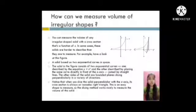Next, how can we measure volume of irregular shapes? You can measure the volume of any irregular shaped solid with a cross section that is a function of x. In some cases, these solids are harder to describe than they are to measure. For example, have a look at this figure. A solid based on two exponential curves in space.